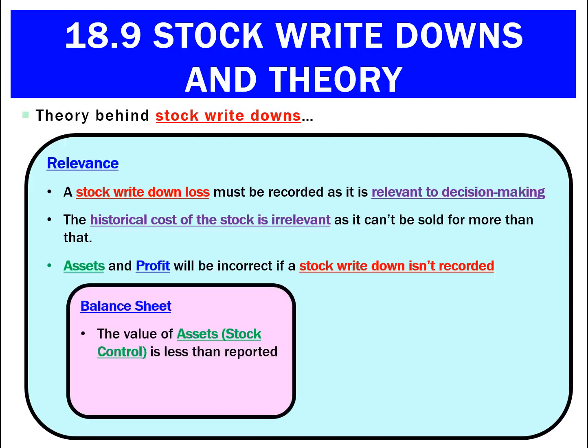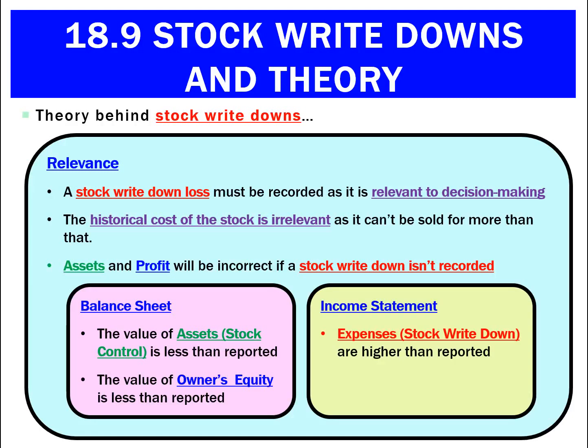If I kept stock at the old price, my assets and my profit would be incorrect if I didn't record a stock write-down. I need to record a stock write-down to make sure my balance sheet is correct — meaning my stock asset will be less than what's shown, and therefore my owner's equity will be less than what I've got. In the income statement, my expenses will be wrong and need to be higher than what I've actually reported. Therefore, my net profit is overstated, and I'll make really bad decisions based on an incorrect balance sheet and income statement.